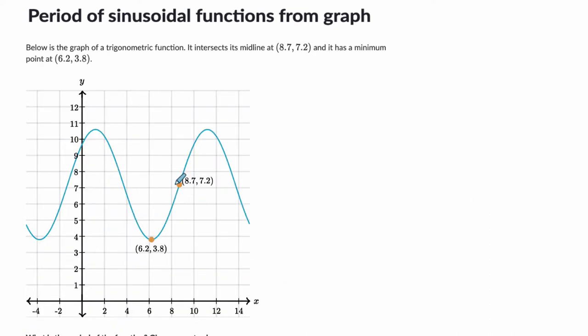Next problem, very similar. Here we're given a minimum point at 6.2, 3.8. So that x position right there, I'm going to do something with that, 6.2, and this point is precisely crossing through the midline of the function. And that brings another element of the symmetry of sine and cosine graphs.